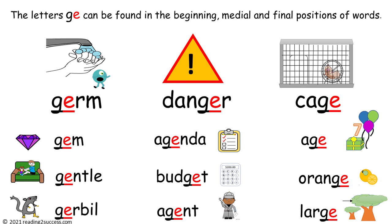And then, read the words that have G-E in the final position: cage, age, orange, and large.